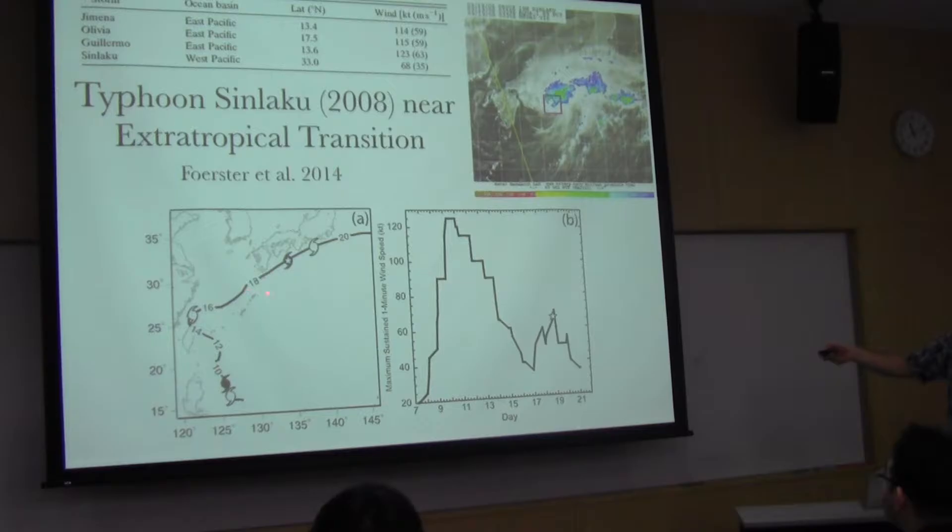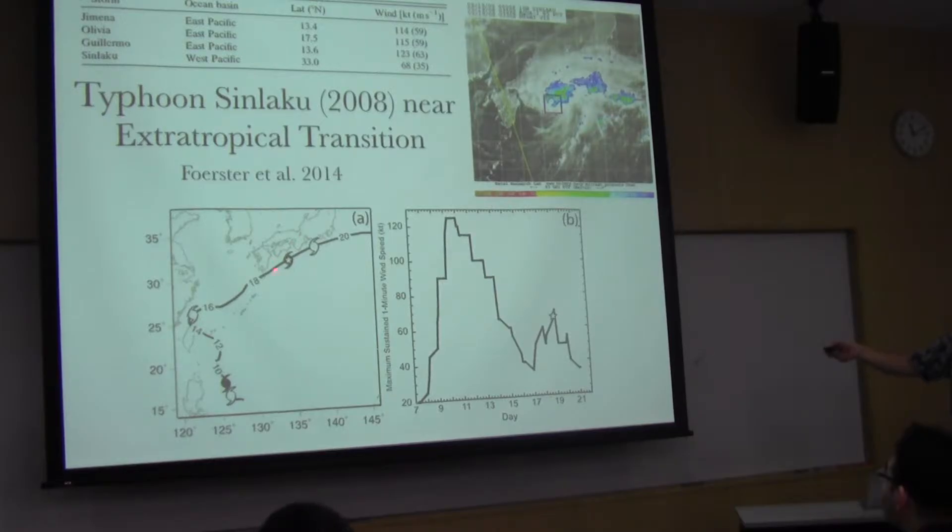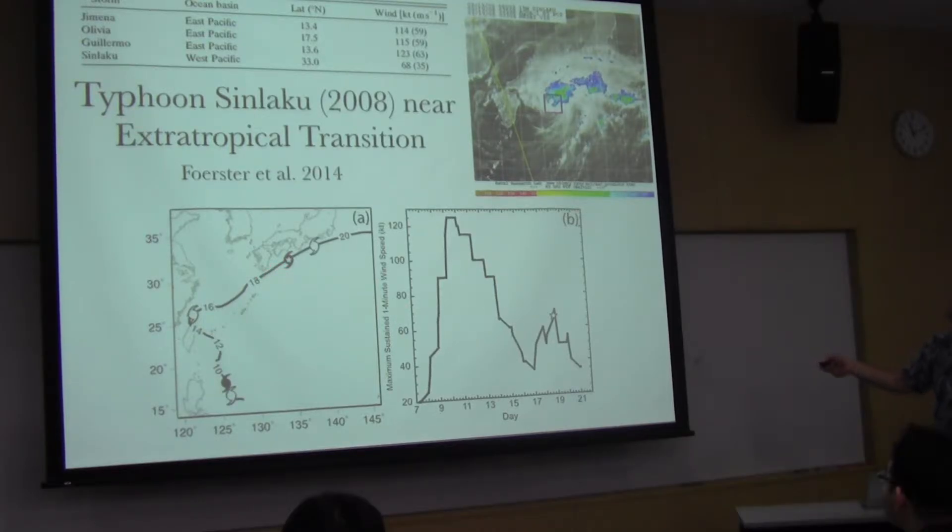The first mission we flew on the 18th. The models were forecasting it to decay and undergo extratropical transition, but in reality, it decayed and then re-intensified to a typhoon, and then underwent extratropical transition over here. We were lucky because we got multiple missions out of it. We flew it on the 18th during this re-intensification phase, and Beth Sanavia wrote a nice PhD dissertation about that phase. Then we flew it on the 19th. We flew it from Kadena, then went to Yokota and flew it three more times.